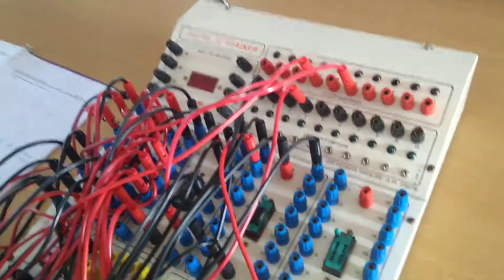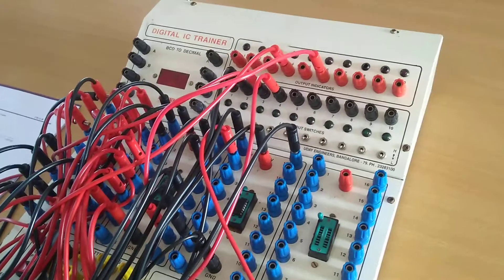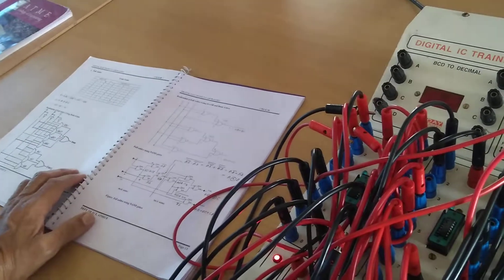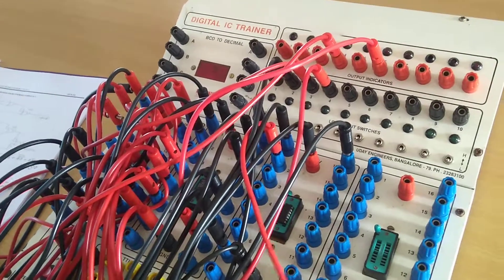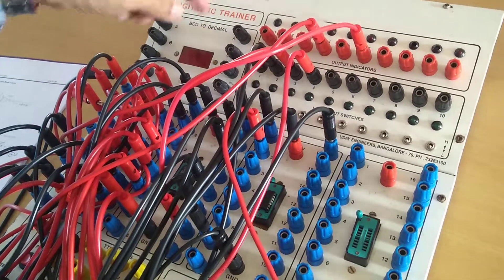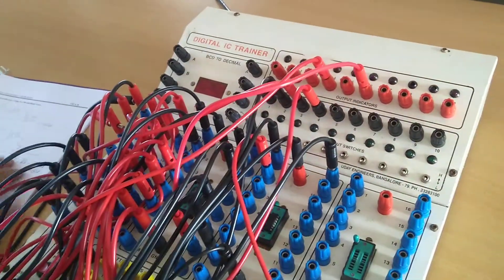Now we will see how it is realized using this digital IC trainer kit. We require three gates: inverter, AND gate, as well as OR gate. They are all connected here. We have three inputs A, B, C and then two outputs sum as well as carry.